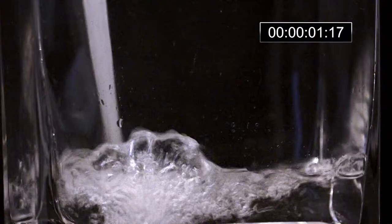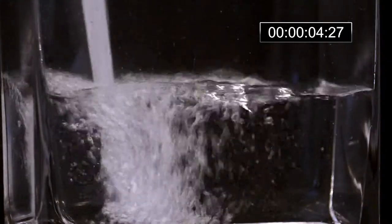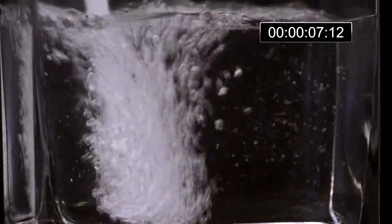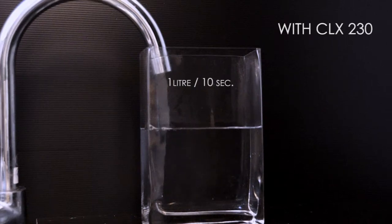In this scene, we have attached a CLX-230 to the sink faucet tip. It is easy to observe that the water flow is frothier as the CLX-230 adds air to the water flow. The result, 40% less water use.